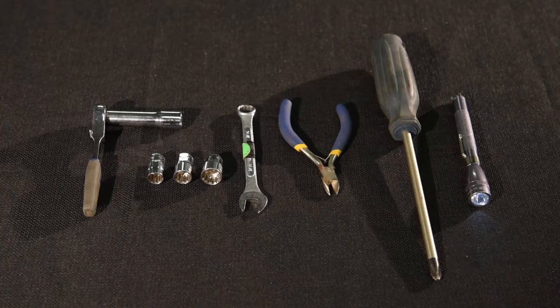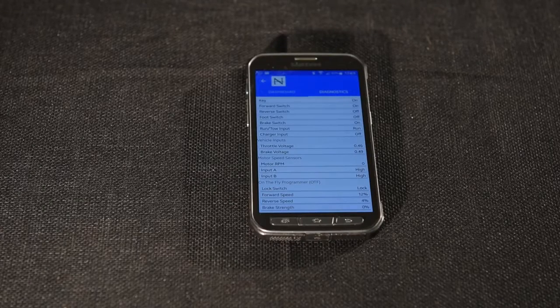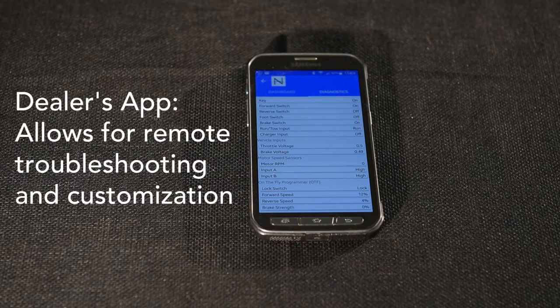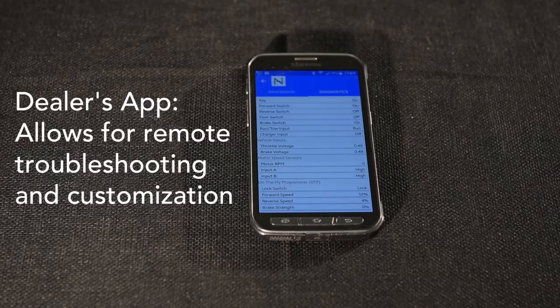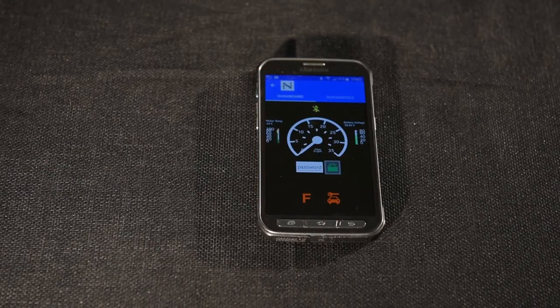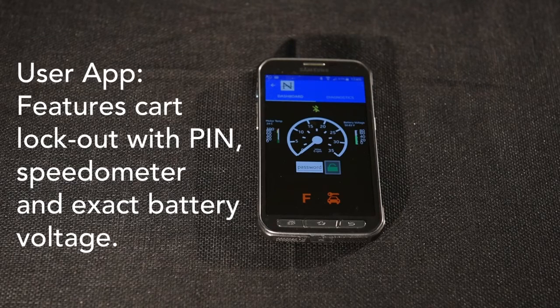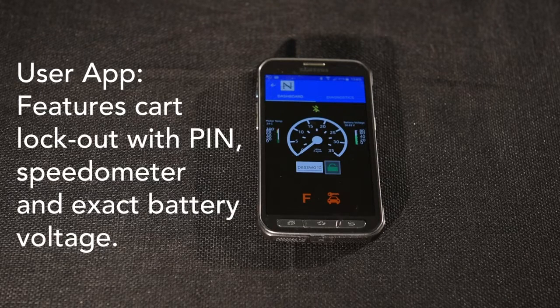Two Bluetooth apps are available: one for dealers and technicians that allows them to remotely troubleshoot and customize the cart, and a second app for end users that allows features like cart lockout with pin, speedometer, and exact battery voltage.